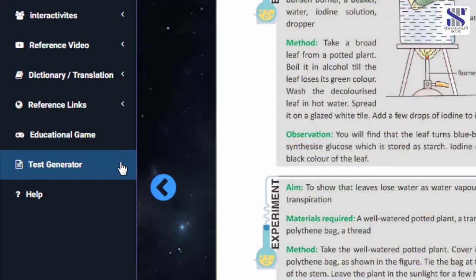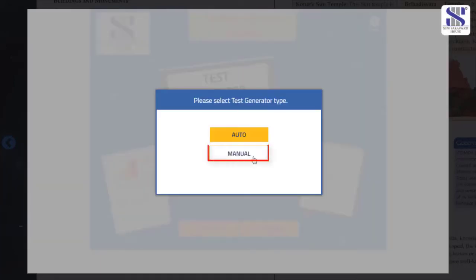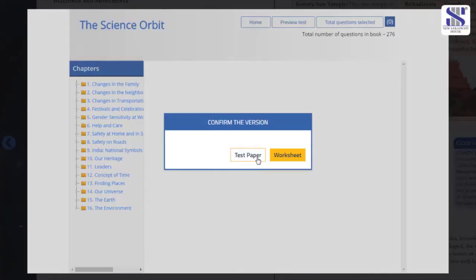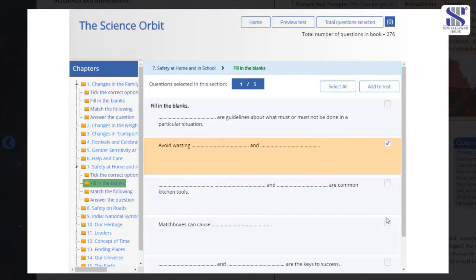Click on the test generator button on the left panel. You have an option to create test papers as well as worksheets. The paper can be made manually or in auto mode. Once you click on the mode, choose the lesson from where you'd like to take the questions. Click on the boxes to choose your questions.